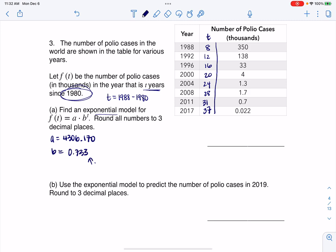Just taking a note, this is decay because your base value is less than 1. If I want to write this up and use the letters given to me, I'm going to say F(t) is going to be equal to 4306.170 times 0.733 to the T. That's my exponential function or exponential model.